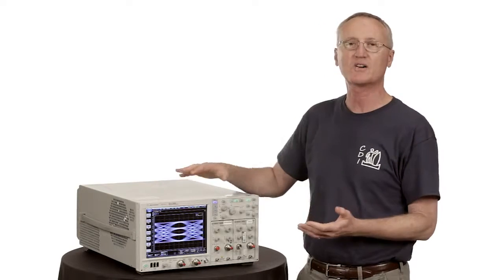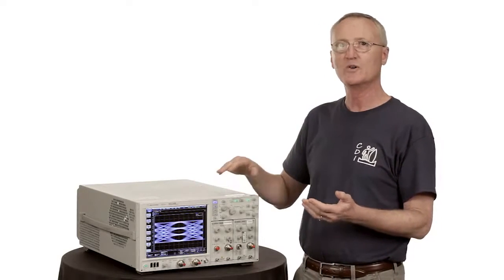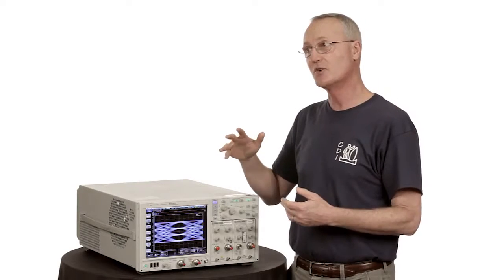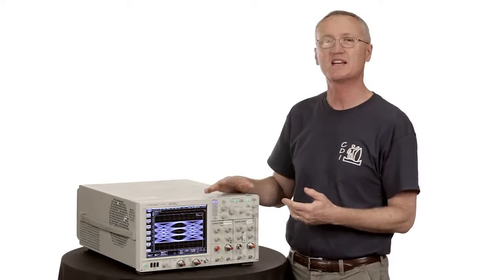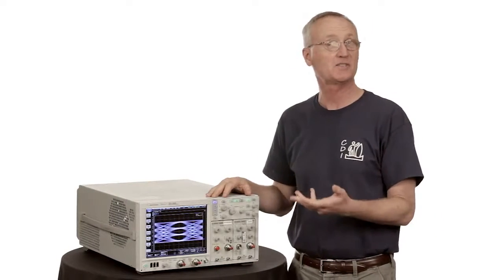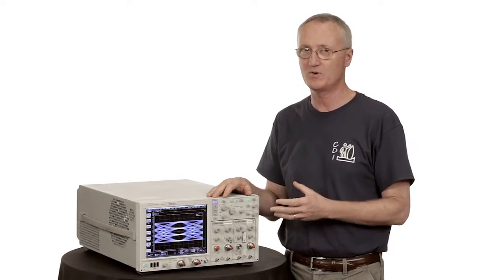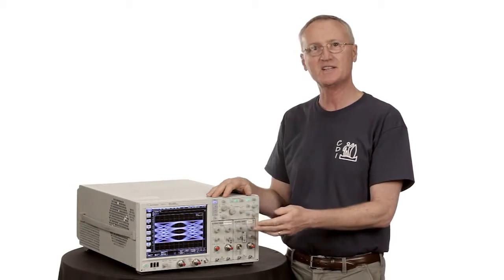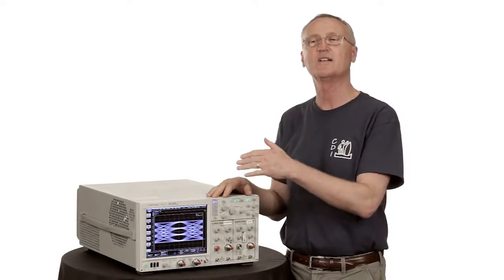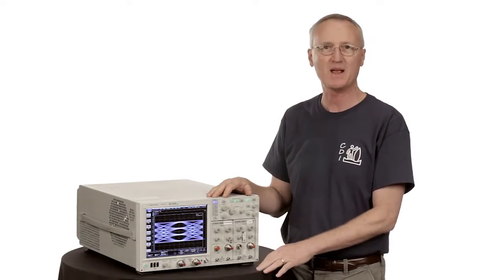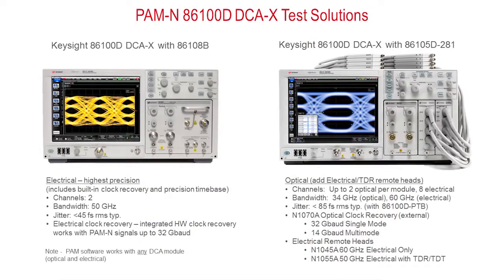So the range of our clock recovery system will go to 32 gigabit per second for NRZ and effectively 64 gigabit per second for PAM-4, but we have to tell the DCA what the baud rate is, which is for PAM-4 half of the data rate.